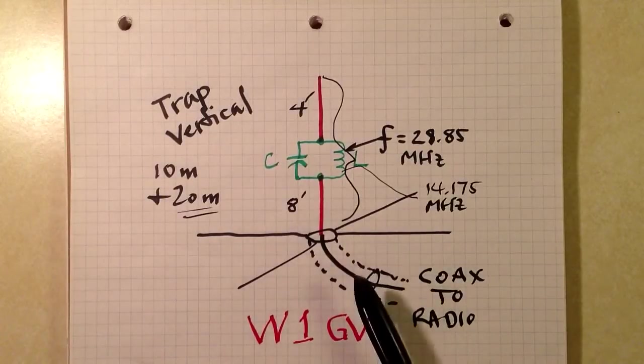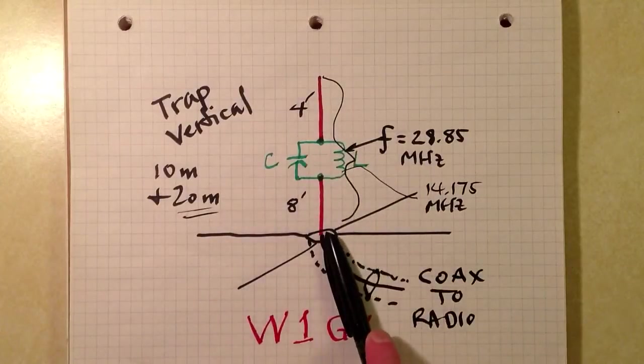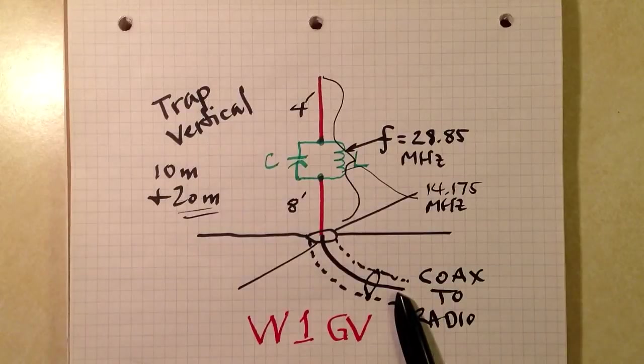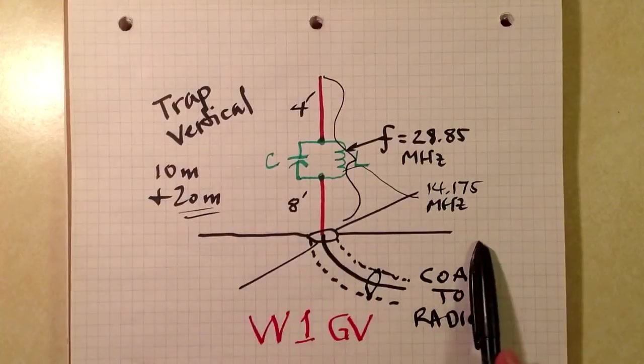What I'm showing here right now is a very simple design for a vertical antenna. This red thing is the radiating element connected to the center conductor of your coax. Here is your shield connected to this ground system.